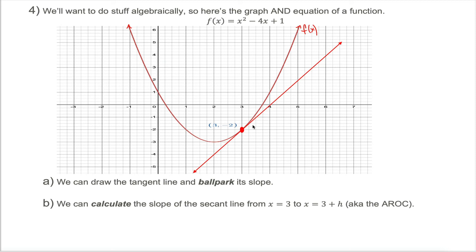Because I've drawn this approximate tangent line, I can ballpark its slope — it looks like it goes up about two units each time it goes over one, so the slope looks to be about two. But that's not super satisfying. We want to be able to calculate the steepness of a curve without drawing an approximate tangent line and ballparking the slope. We want equations and precise answers.